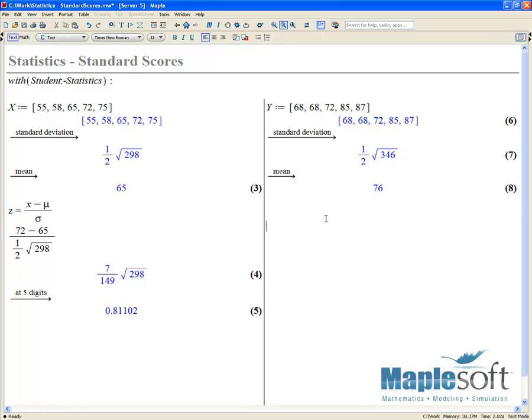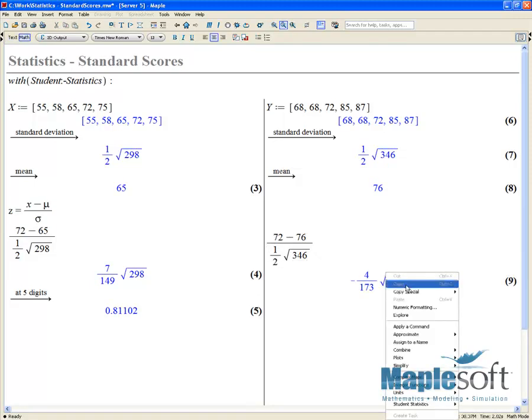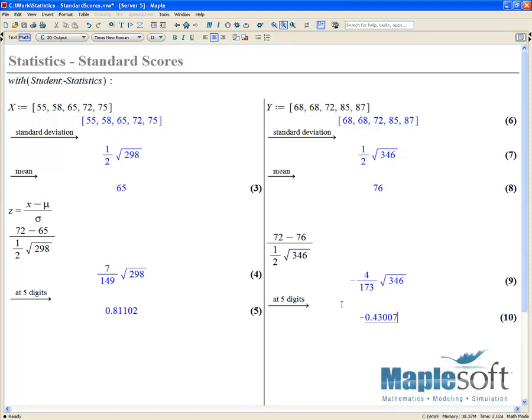Let's go through and do the same thing over here for the calculus course. We'll take our value, which was 72 minus the mean, which is 76. We'll divide by the standard deviation, and we'll approximate that value. In this case, we are minus or below the mean by approximately half a standard deviation or so.